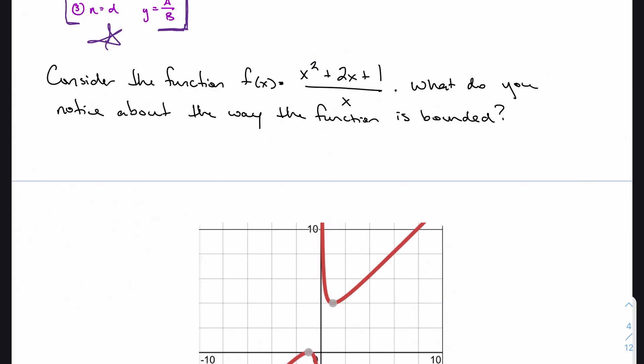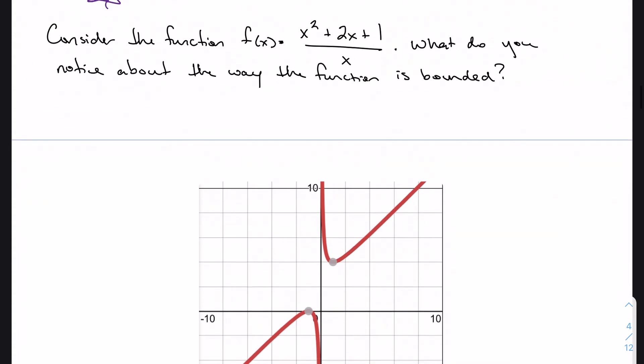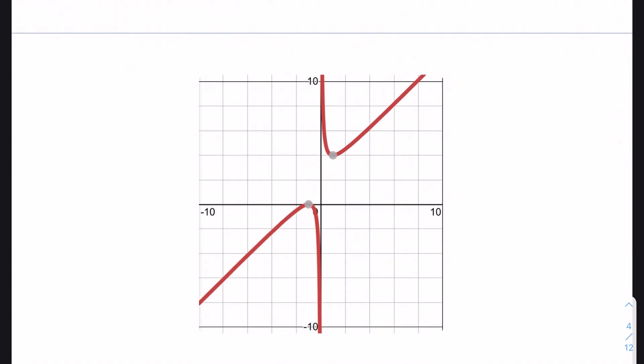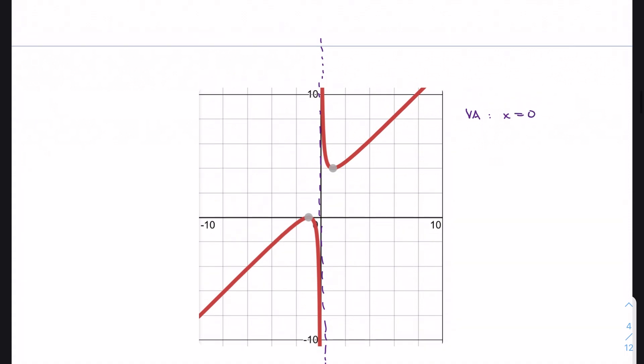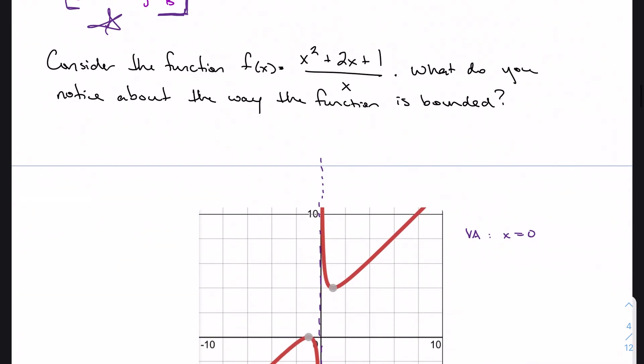There's one addition to our discussion of asymptotes. Let's just consider this function here: x squared plus 2x plus 1 over x. If we notice this graph, we notice a couple things. We notice that it looks like there is a vertical asymptote right here at 0, x equals 0. And we can tell that from the function. There's no way I could plug in 0 and get a result, so that makes sense.